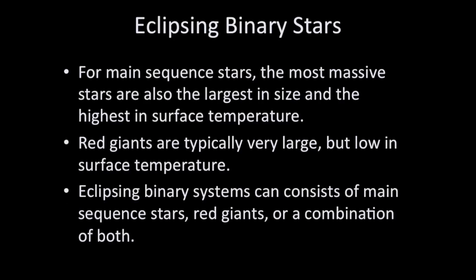There are a couple rules that we need to observe when describing the relationships between different types of stars and their eclipsing binary light curves. Main sequence stars follow a very specific pattern for size and temperature and mass. The biggest main sequence stars, that is the most massive ones, have the largest size and the highest temperatures.